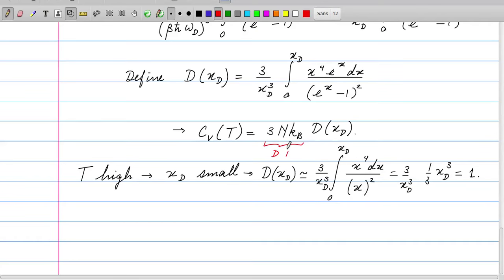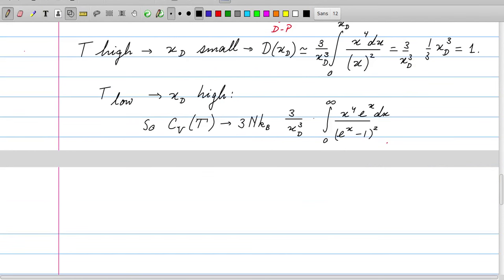Then obviously we look at low temperatures for which the Debye x has a large value. So we replace the upper bound in the integral by plus infinity. Then this integral in fact can be done. It's somewhat complicated and I will not go into details here.